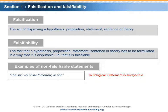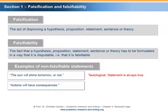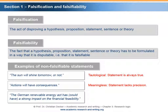The tautological statement is always true. The sentence 'actions will have consequences' is non-falsifiable because it is meaningless — the statement lacks precision. The sentence 'the German Renewable Energy Act has or could have a strong impact on the financial feasibility' is non-falsifiable because it is meaningless; the statement lacks precision due to the imprecise adjective 'strong.'